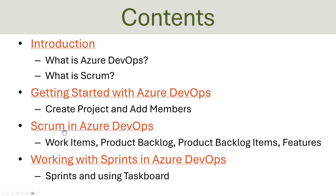Then we will see how we can use Scrum within Azure DevOps. We will use work items, see how we can create and use a product backlog and create product backlog items and features. Then we will start working with the sprints in Azure DevOps, create a sprint, and use the task board.